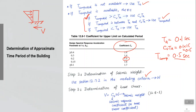If Cs comes out to be 0.1, it means your future earthquake is going to produce lateral forces which are 10 percent of the weight of the building. If it is 0.2, that means 20 percent of the weight of the building. So step 3 is to calculate base shear by determining this base shear coefficient — the main task is to determine Cs.